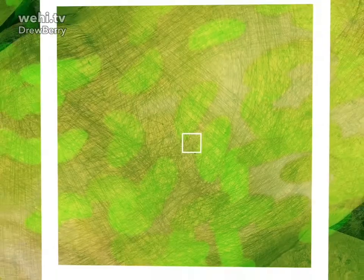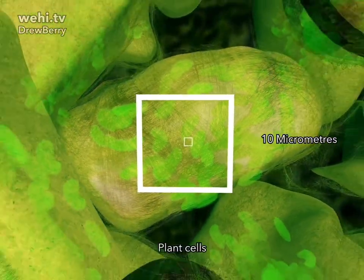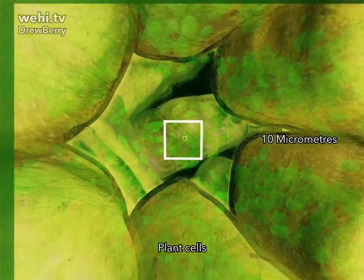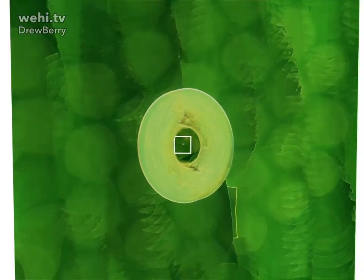An outer coat of cellulose gives plant cells strength and protection, enabling them to form and hold different shapes.